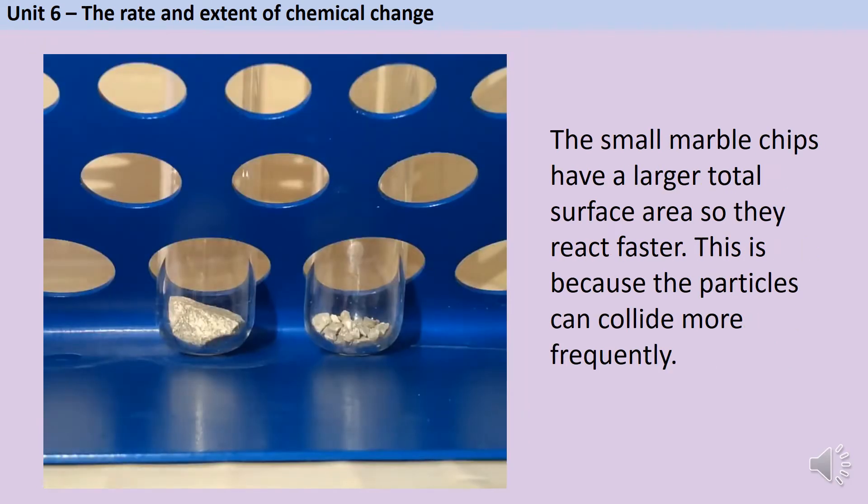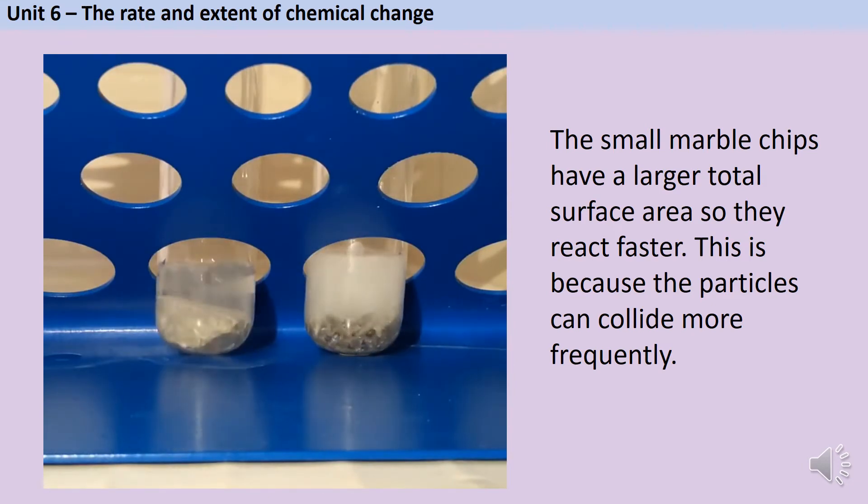For a more traditional example of the impact of surface area on rate of reaction we can return to that reaction using the calcium carbonate chips and the acid. Here I've used 0.5 molar hydrochloric acid for both tubes but as you can see the smaller pieces of calcium carbonate are reacting much faster than the one single piece, even though both tubes contain the same mass of calcium carbonate.